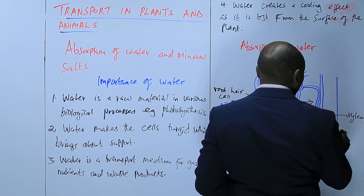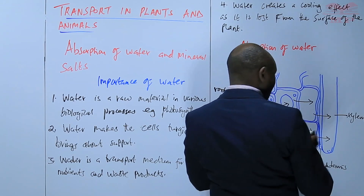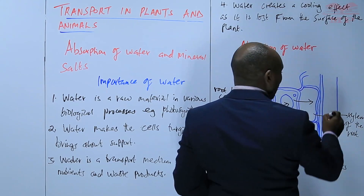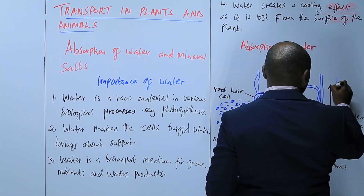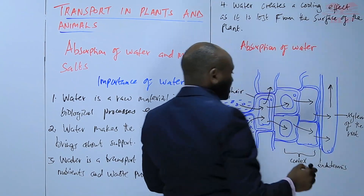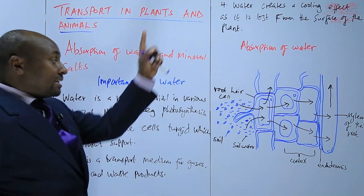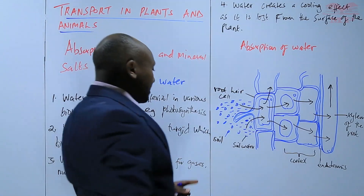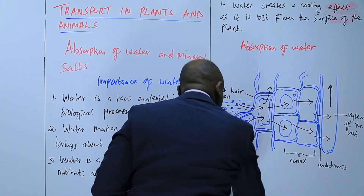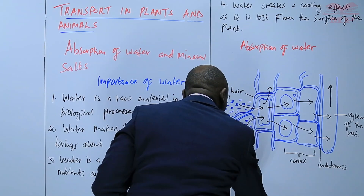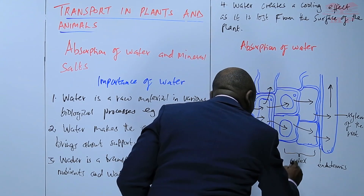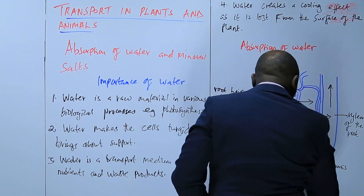When the water gets to the xylem of the root, it is conducted upwards to the xylem of the stem, and then finally to the xylem of the leaves. Basically, this process entails absorption of water by osmosis.